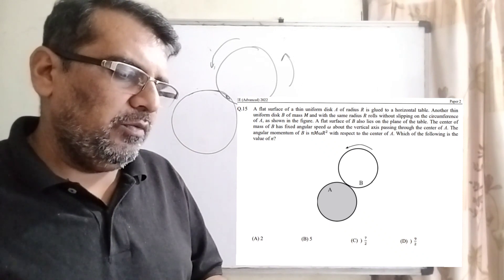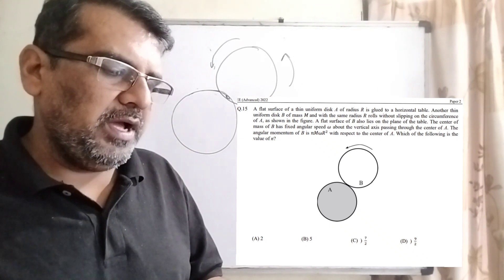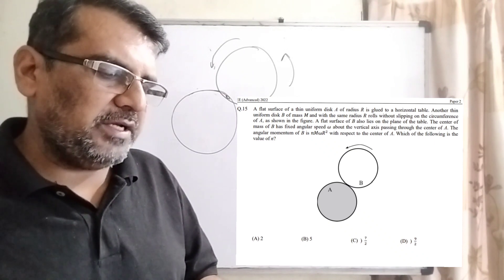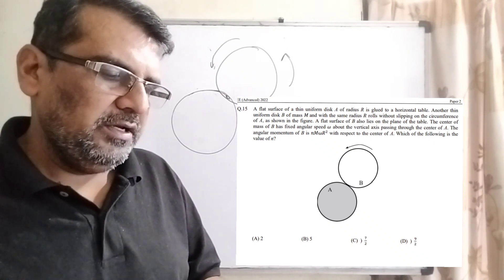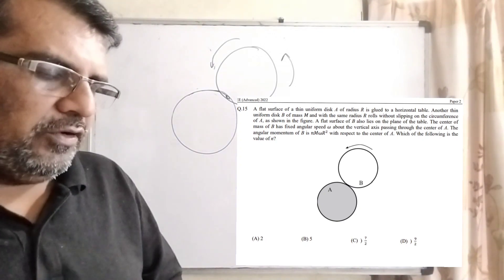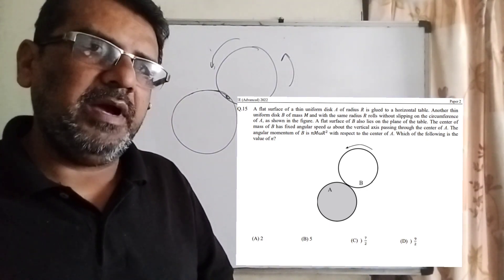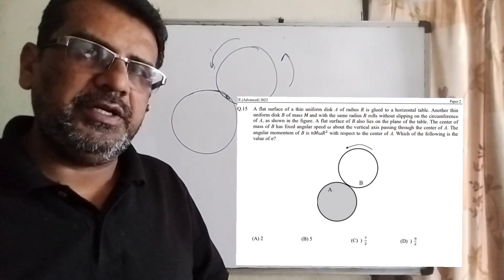The angular momentum of B is N M omega R square with respect to the center of A. Which of the following is the value of N? You have given four options: A is 2, B is 5, C is 7 by 2, and D is 9 by 2.